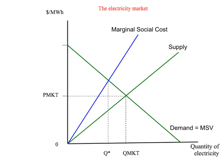Let's now see what the effect of the externality is on our socially optimal outcome and compare that to our market outcome. Our market outcome, as usual, is where the demand curve intersects with the supply curve — giving a price of P market and a quantity of Q market. The socially optimal level of electricity generation is where the marginal social cost of an extra unit equals the marginal social value of an extra unit — where our marginal social value curve intersects our marginal social cost curve — and that's the quantity Q star. From the perspective of society, we end up with too much electricity being produced in a perfectly competitive electricity market.